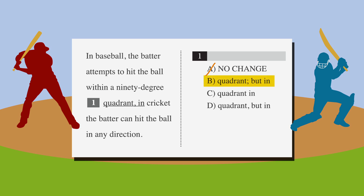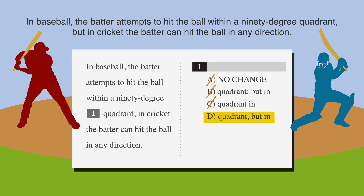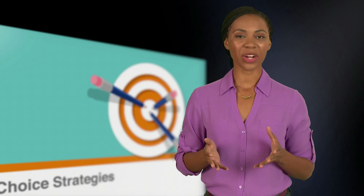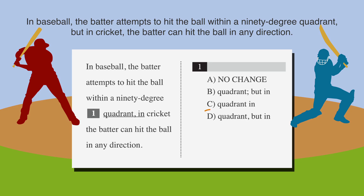Answer choice B — 'quadrant semicolon, but n' — is incorrect because 'but' is a conjunction that we cannot use with a semicolon, so we eliminate choice B. Answer choice C — 'quadrant n' — is missing all punctuation, it's a run-on sentence, so we eliminate that too. Answer choice D — 'quadrant comma but n' — suggests adding 'but' after the comma. The sentence then reads: in baseball, the batter attempts to hit the ball within a 90-degree quadrant, but in cricket, the batter can hit the ball in any direction. This is now grammatically correct — it uses punctuation and conjunctions correctly while keeping the sentence structure intact. Circle D and celebrate your home run.